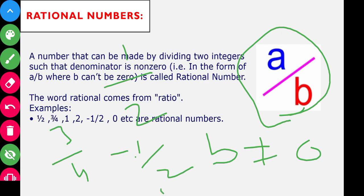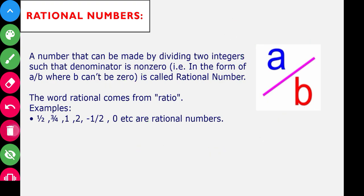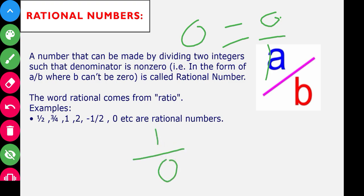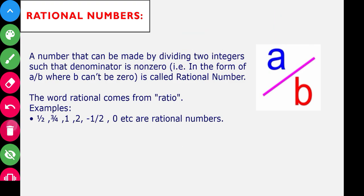Zero is also a rational number because 0 can be written as 0/1, where both 0 and 1 are integers. However, 1/0 is not a rational number because the denominator is 0, which is not allowed for rational numbers.